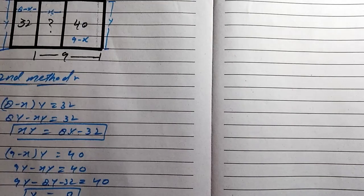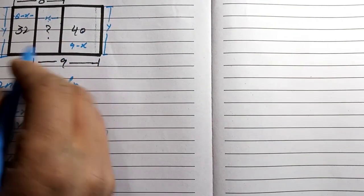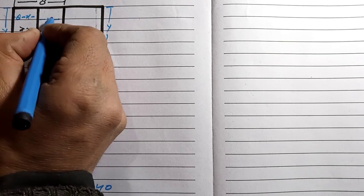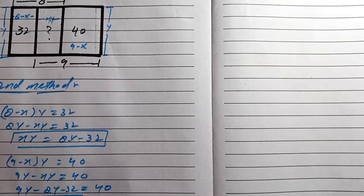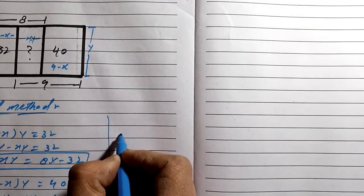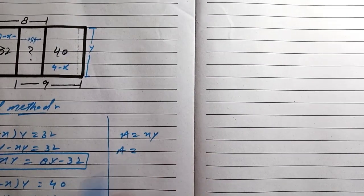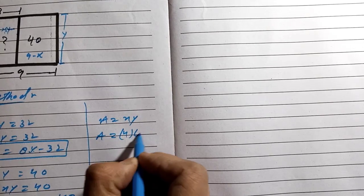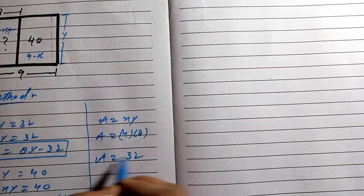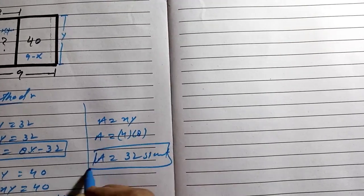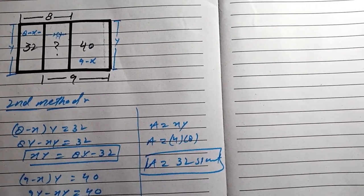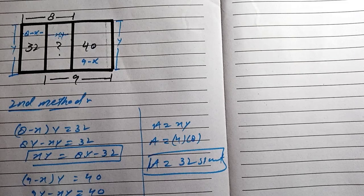Now we can find the value of a. The area a equals x times y, so a equals 4 multiplied by 8, which equals 32 square units. We get the value of a equal to 32. This is the second method to find this question. I hope you enjoyed the question — thanks for watching.